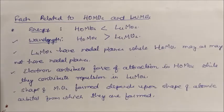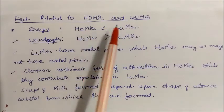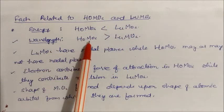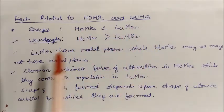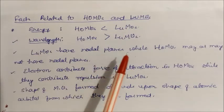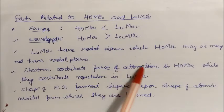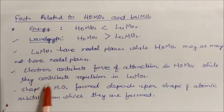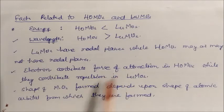The basic facts related to HOMO and LUMO: energy-wise, HOMO has less energy than LUMO, and wavelength-wise, HOMO has more wavelength than LUMO. HOMO is the bonding orbital and LUMO is the anti-bonding orbital. LUMO has nodal planes while HOMO may or may not have nodal planes. Electrons contribute attraction force in HOMO, while in LUMO electrons contribute repulsion. The shape of molecular orbitals depends upon the shape of the atomic orbitals from which they are formed.